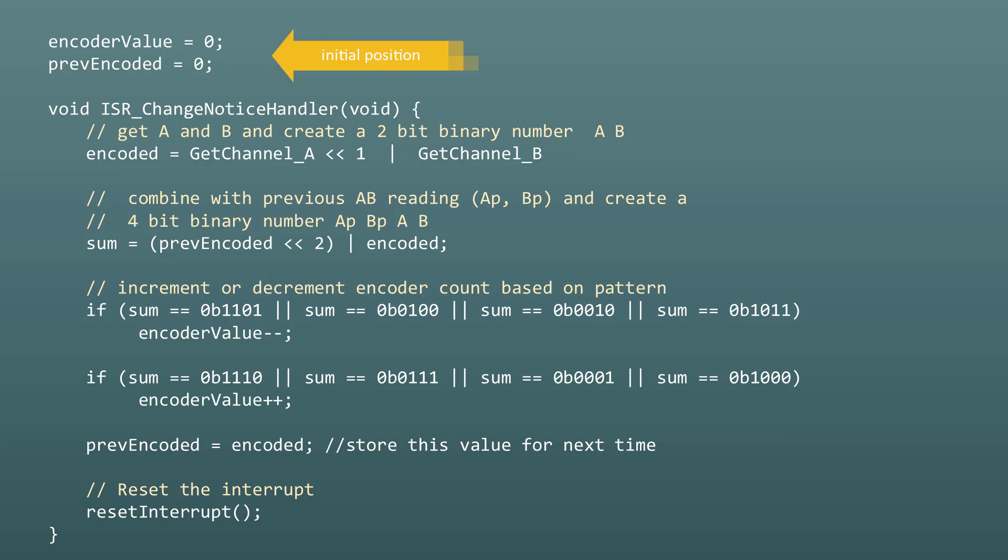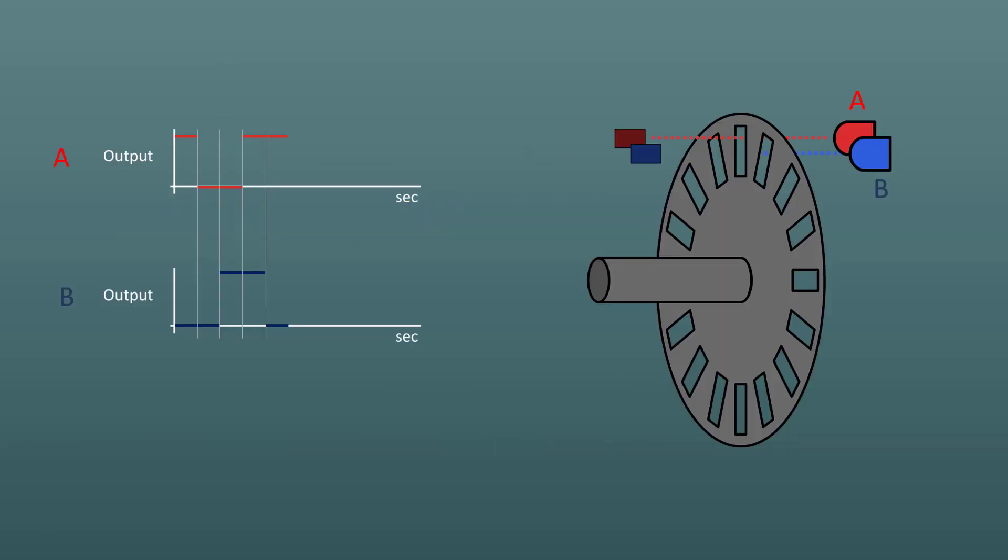And this value is relative to where you started keeping track of the pulses. You never know the absolute position of the shaft, only how far it's gone since you started tracking. That's why this type of encoder is called an incremental encoder.